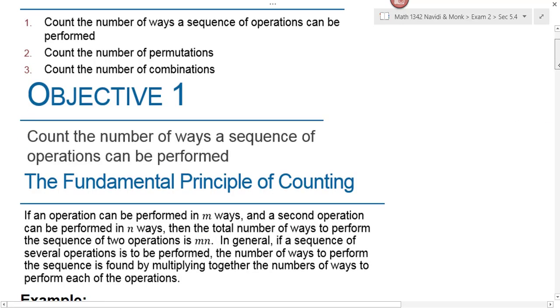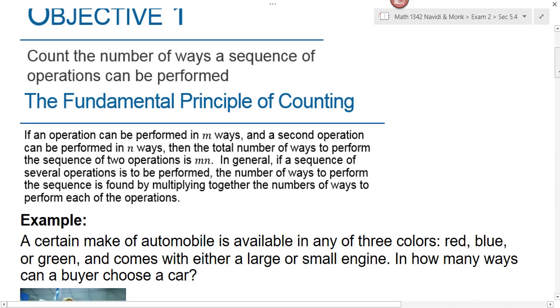Objective 1 is looking at counting the number of ways a sequence of operations can be performed. We're going to be using what's called the fundamental principle of counting. If an operation can be performed in m ways, let's say three ways, and a second operation can be performed in n ways, let's say five ways, then the total number of ways to perform a sequence of two operations would be the product m times n, or in this case five times three. So we would say that there would be 15 ways that we could perform that operation. M and n are just variables that wait for you to drop in some numbers.